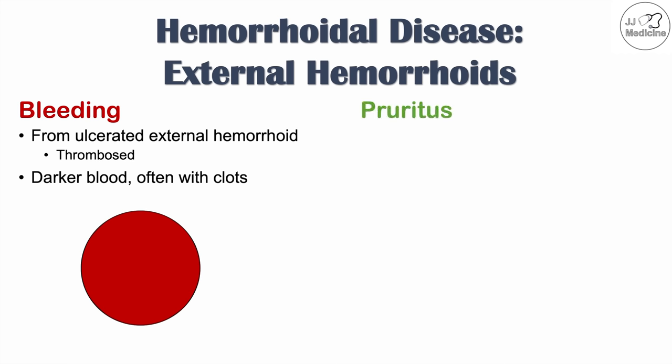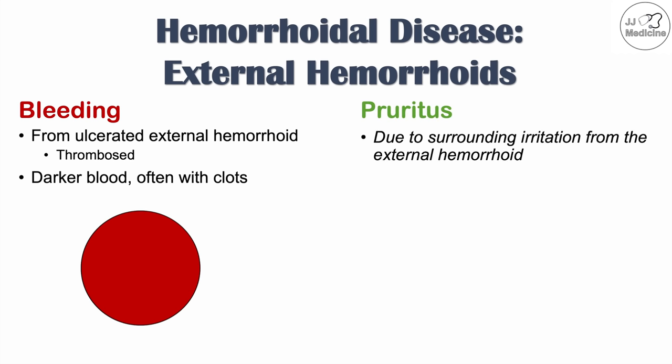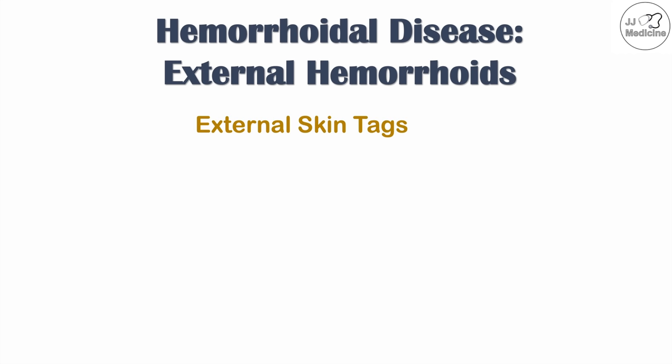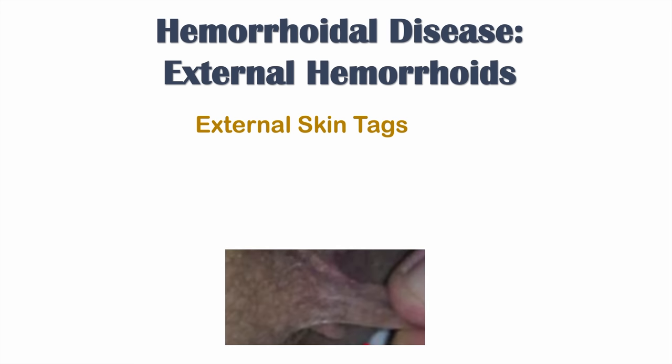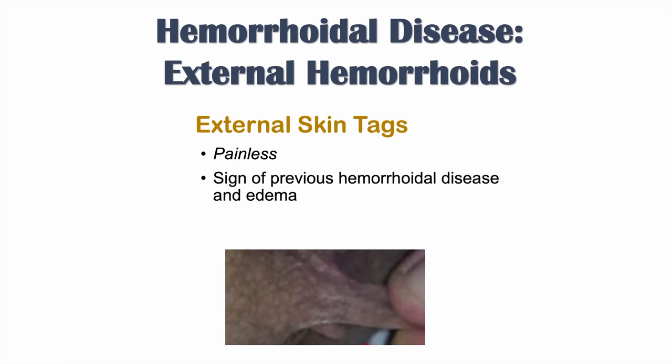Another symptom of external hemorrhoids is pruritus — that sensation of itching — due to surrounding irritation from the external hemorrhoid itself. A sign unique to external hemorrhoids is external skin tags, which are painless and are often a sign of previous hemorrhoidal disease and edema. If there had been swelling in that area that has resolved, it can lead to external skin tags.